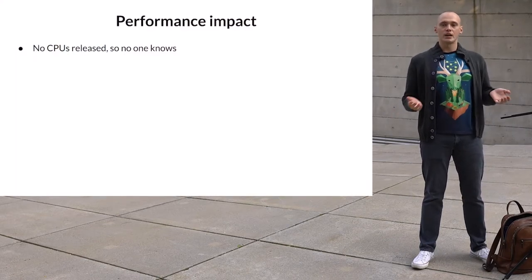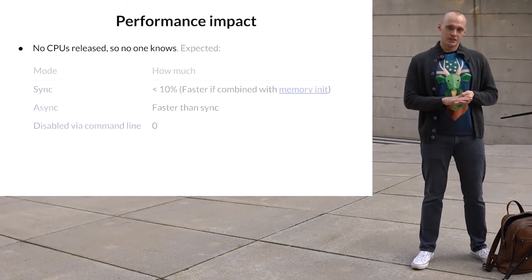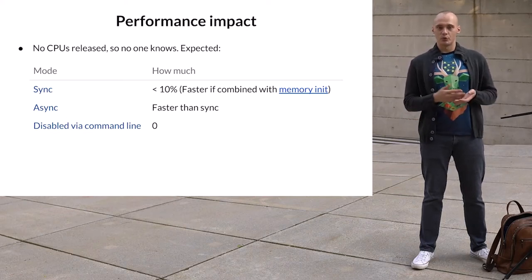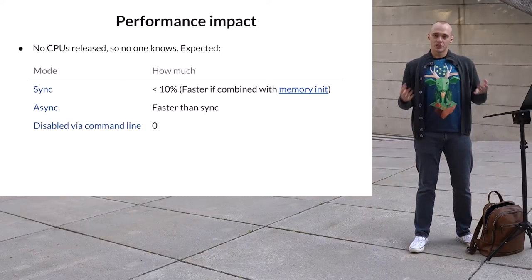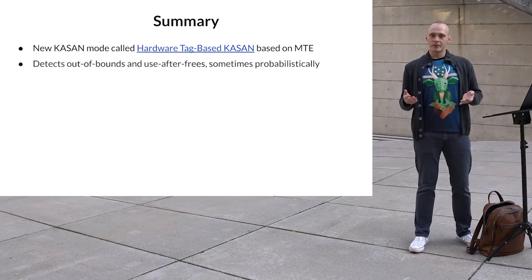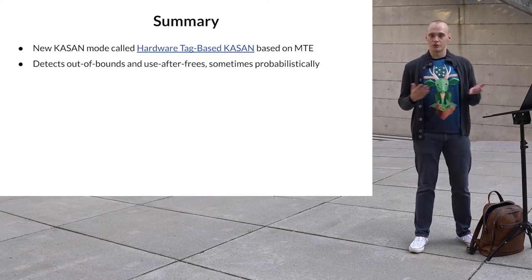What about performance? Right now, no one knows — there are no CPUs that support MTE, so measuring the real performance impact is impossible. The expected overhead is less than 10% for the sync mode, and the async mode is supposed to be a few times faster. But even 10% sounds great. To summarize: there is a new KASAN mode based on MTE. It detects the main types of memory corruptions. The detection is probabilistic, but the chance of missing a bug is low — about 7%.